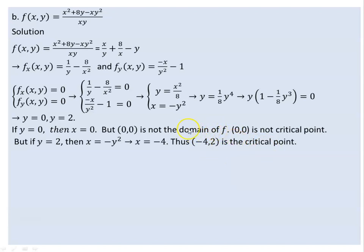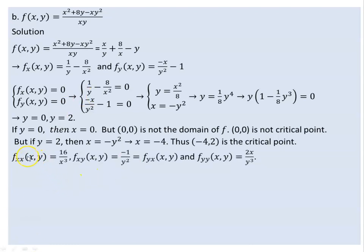At the point (−4, 2), we apply the second derivative test using second-order partial derivatives. Fxx: differentiating −8/x twice gives 16/x³. Fxy: the derivative of −8/x² with respect to y gives 0, and the derivative of −1/y with respect to x gives −1 over y squared. Fyy: differentiating −1/y twice gives 2x over y³.